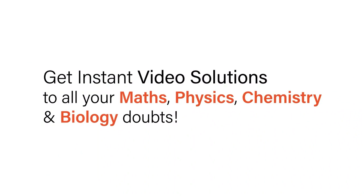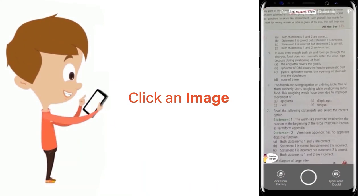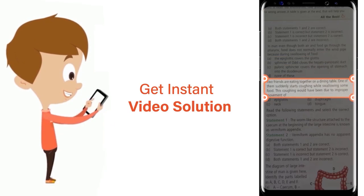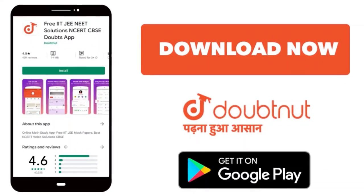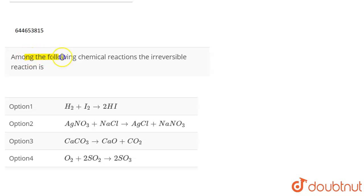With Doubtnut, get instant video solutions to all your math, physics, chemistry, and biology doubts. Just click the image of the question, crop the question, and get instant video solutions. Download Doubtnut app today. The question is: among the following chemical reactions, the irreversible reaction is...